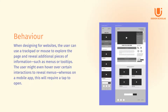Behavior: when designing for websites, the user can use a trackpad or mouse to explore the page and reveal additional pieces of information such as menus or tooltips. The user might even hover over certain interactions to reveal menus. Whereas on a mobile app, this will require a tap to open. When wireframing for mobile apps, this means thinking more carefully about how you will encourage your user to tap a specific button to reach a specific goal.